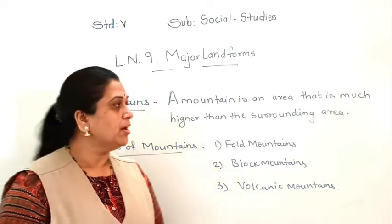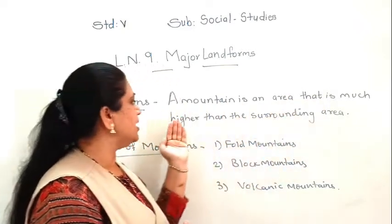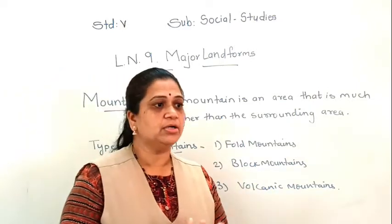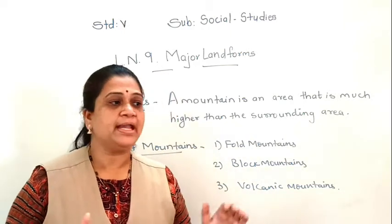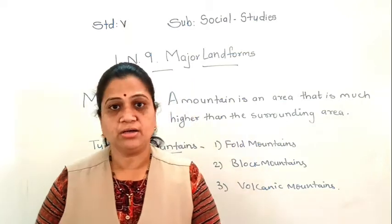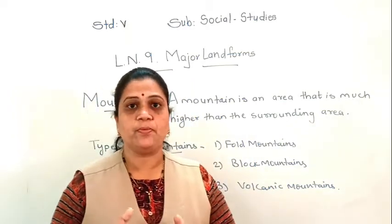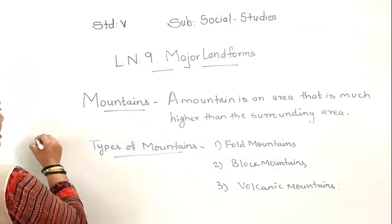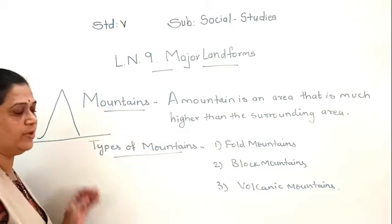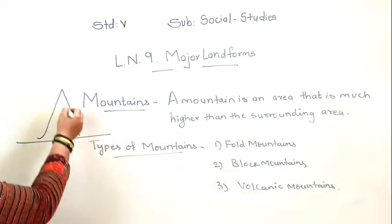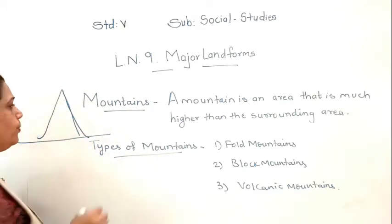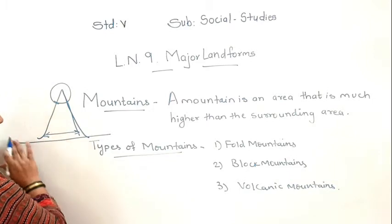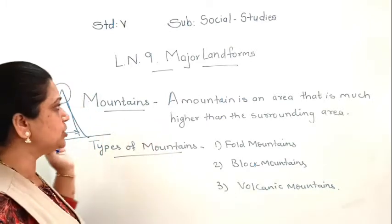Now children, what is a mountain? A mountain is an area that is much higher than the surrounding area. The elevation of the earth's surface is not uniform — we see many variations on the earth's surface. Some elevations are very high, and this type of elevation is called a mountain. A mountain has a steep slope, a very pointed peak, and a broad base.